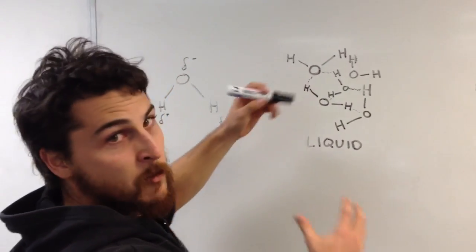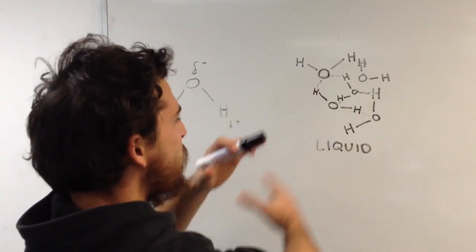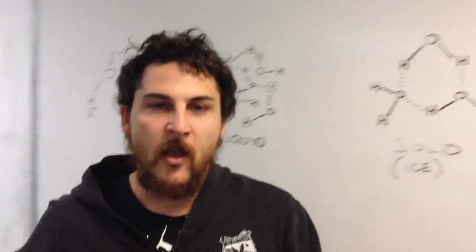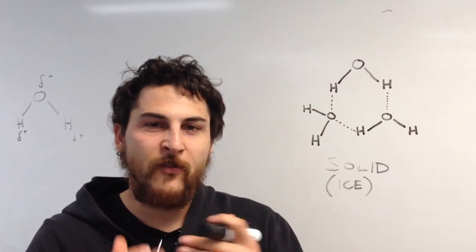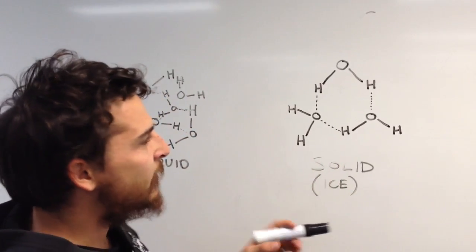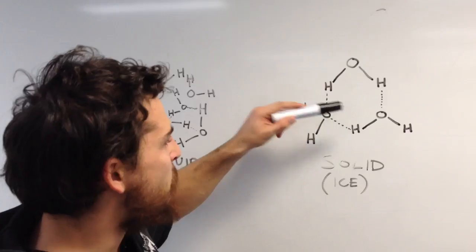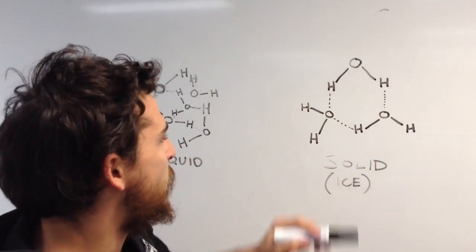But because the liquid has so much energy, it moves around and it breaks these bonds and they reform and they break and they reform. Now at about 4 degrees, the water gets cold enough and enough energy is taken out that they slow down enough to form this kind of hexagonal shape with the three molecules that we see here.